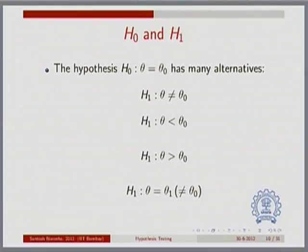Notice the subtle thing: the pharma company could directly try to prove H1 — that theta is greater than theta-naught, active molecule better than sugar pill. But instead they take on the question 'my molecule equals a sugar pill' as H0, and try to disprove H0 rather than prove H1. An alternate form of H1 is when theta takes on a unique value theta1 which is not theta-naught. For example, somebody says the acceleration due to gravity is not 9.8 but exactly 9.6 — setting up a fight between 9.8 and 9.6.